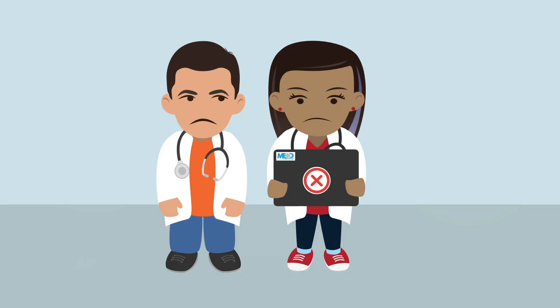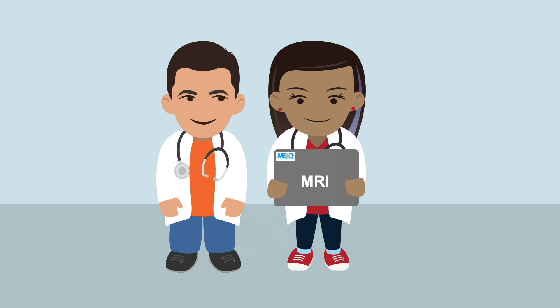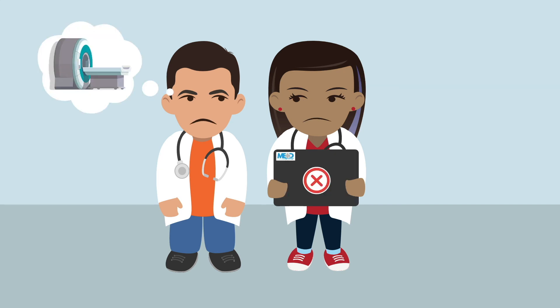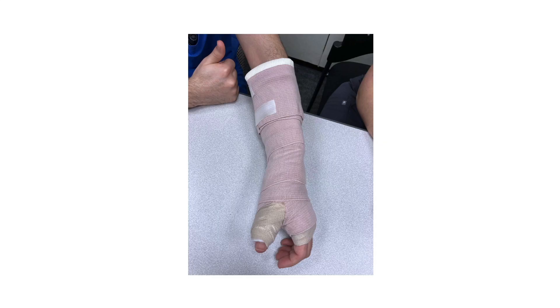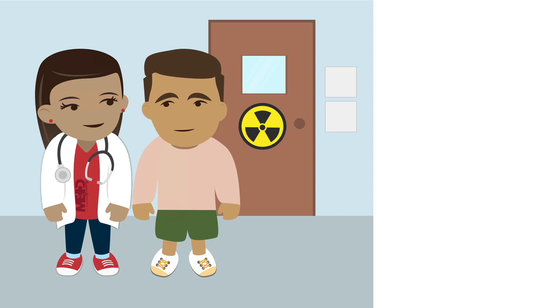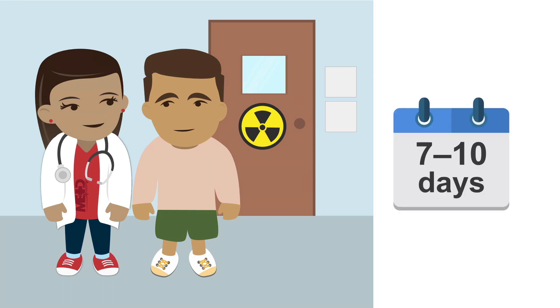Unfortunately, despite this additional view, up to 30% of acute scaphoid fractures may be missed. If available, a limited MRI of the carpal bones will be nearly 100% sensitive for making the diagnosis. Where MRI is not easily available, the best course of action when this injury is suspected is to place the patient in a thumb spica splint and repeat an x-ray in 7 to 10 days.